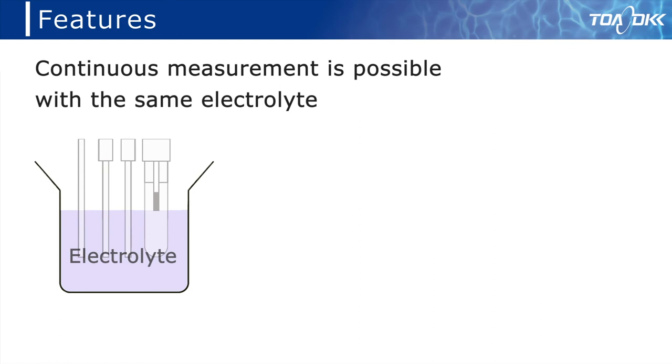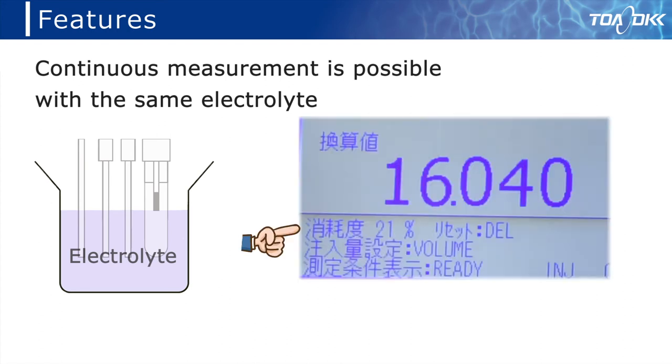You can make continuous measurements with the same electrolyte, but the electrolyte will gradually wear out. The degree of consumption of the electrolyte is displayed on the screen, so you can know the guideline for replacement time and ensure stable measurement.